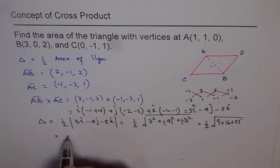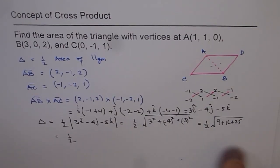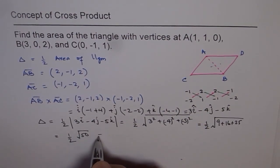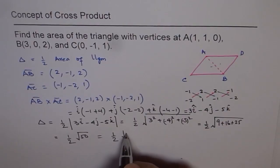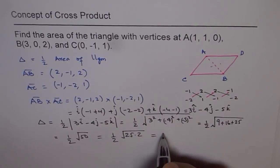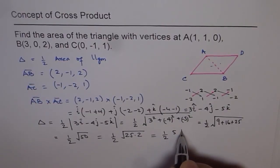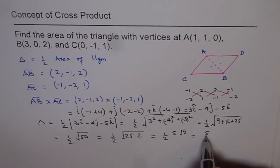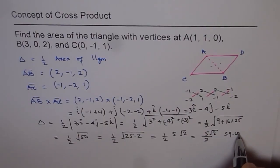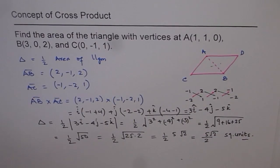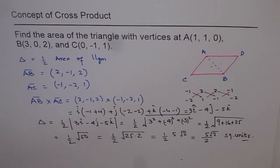So that is the area, and so it is half of, we can add 9 plus 16, 25, 25 is 50. Which could be written as half of 50, which can be written as 25 times 2. So that is half of 5 times square root 2. So you could write 5 over 2 square root 2 as the area in square units. So that becomes the answer for this particular question. I hope you understand the method. The method is, area of triangle is half the area of parallelogram, and area of parallelogram is magnitude of cross product of the two sides. Thank you.